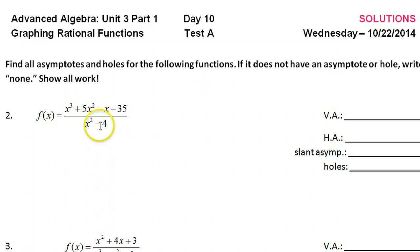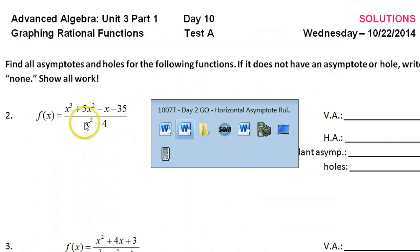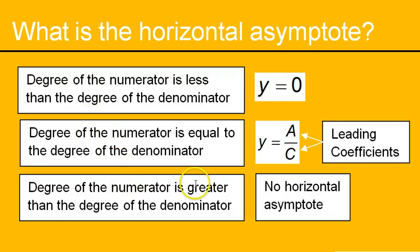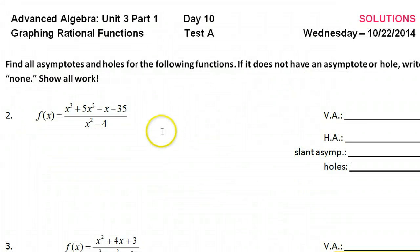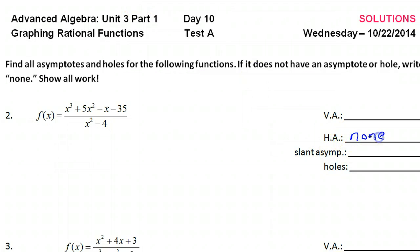Looking at the degree, the degree of the numerator is higher than the denominator. So that means there will be no horizontal asymptote. Let's go ahead and just write down none right there.